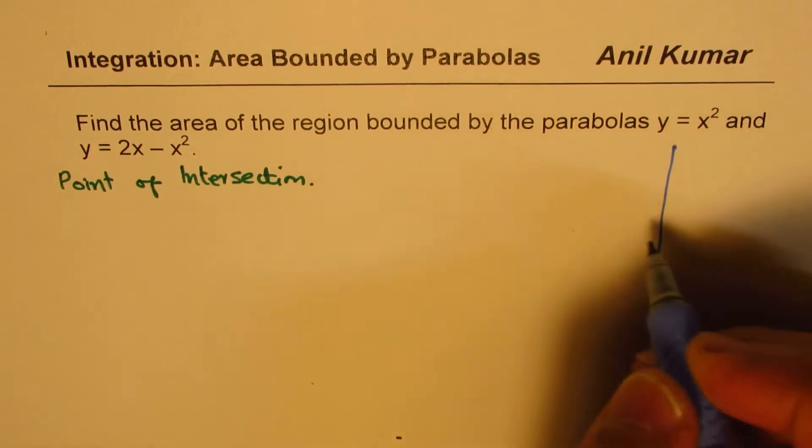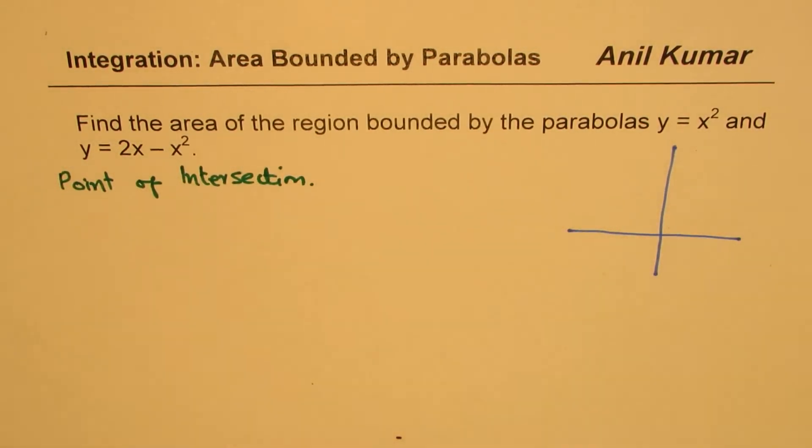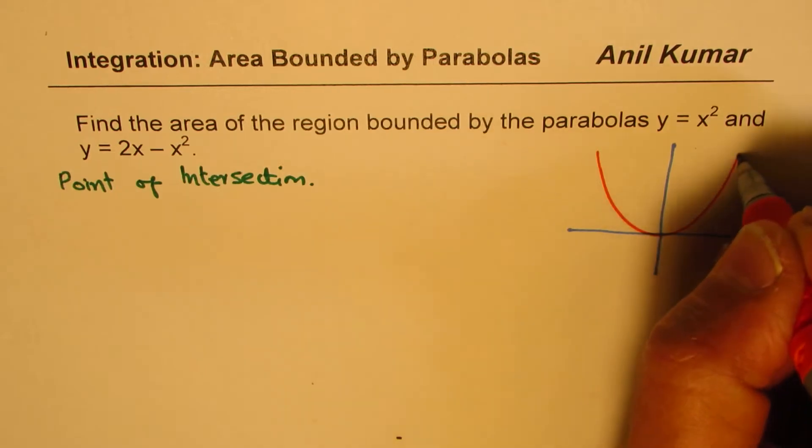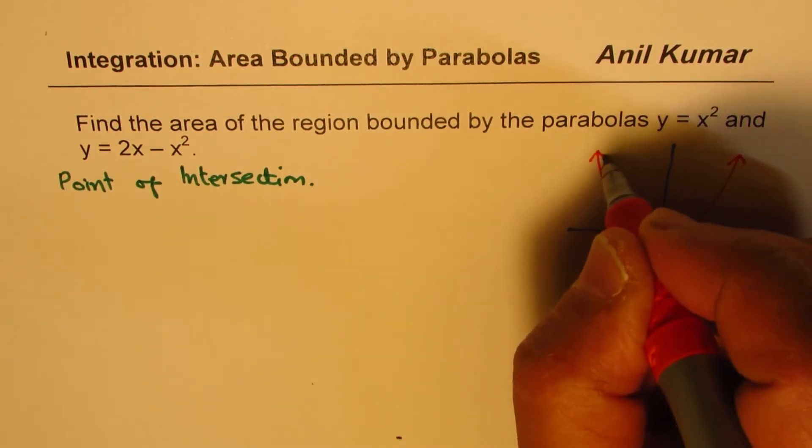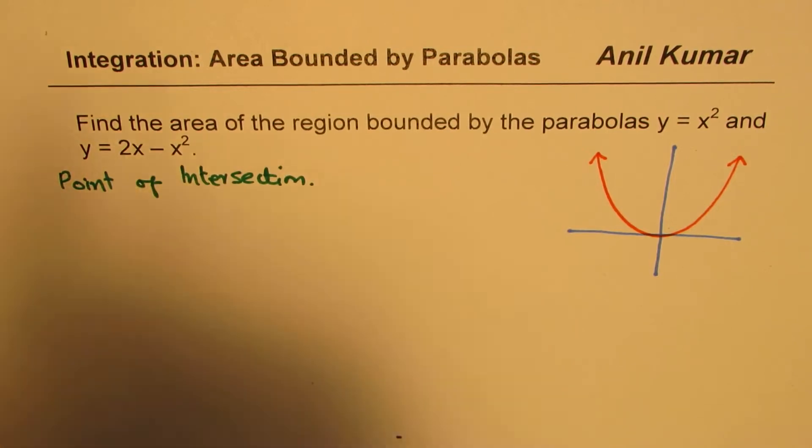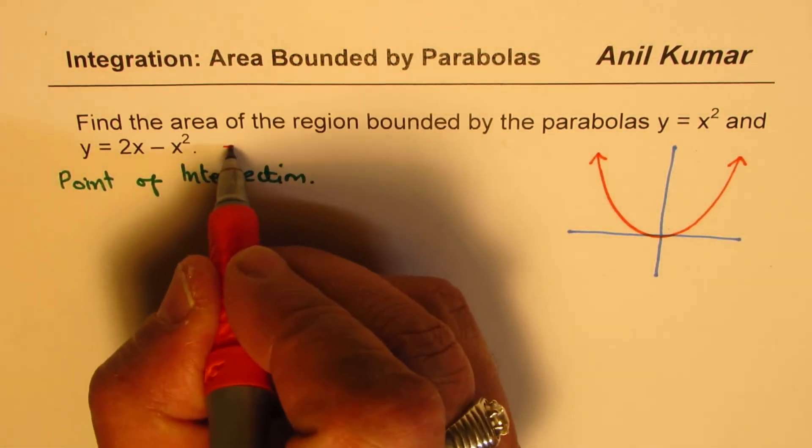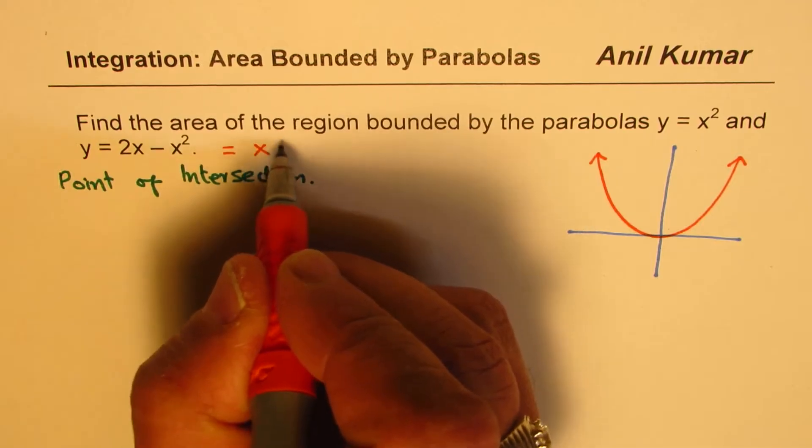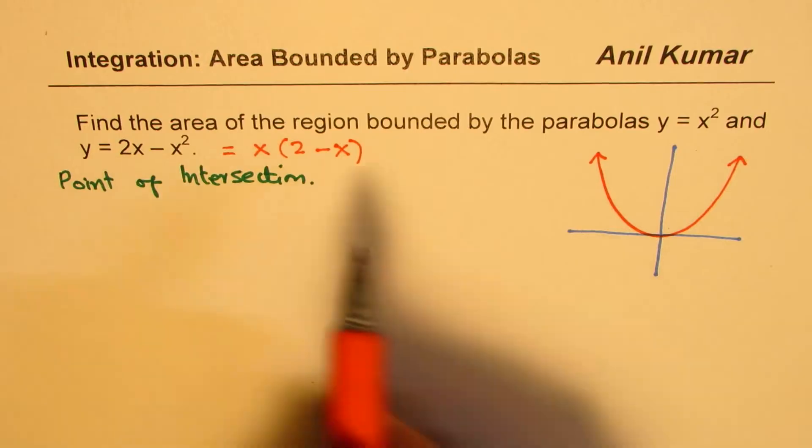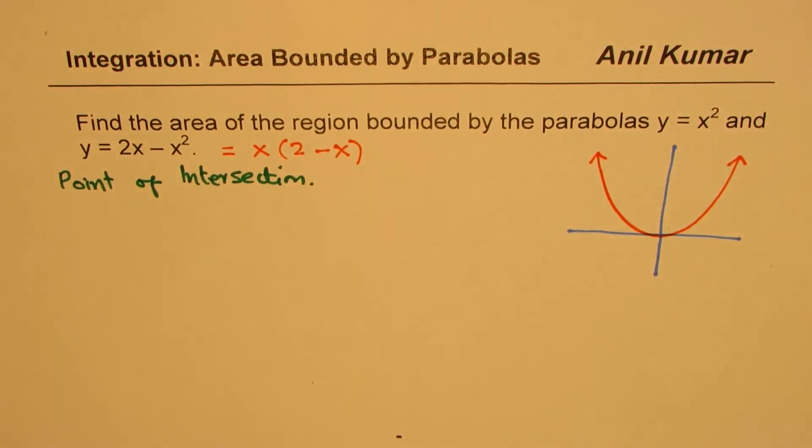Let me sketch, make a rough sketch of these two parabolas. y equals x squared is a parabola which opens up, is a parent function, y equals x squared. And the other one is y equals 2x minus x squared. You could take x common, so you get 2 minus x as the other factor. So 1, 0 is at x,